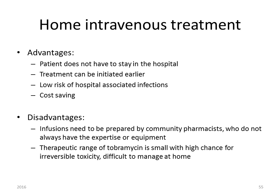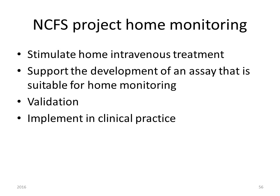At this moment, many CF patients receive home intravenous treatment. The advantages are that the patient doesn't have to stay in hospital, treatment can be initiated earlier, there is a low risk of hospital-associated infections, and it is cheaper than hospital admission. The disadvantages are that infusions must be prepared by community pharmacists who may lack expertise or equipment, and the therapeutic range of tobramycin is very narrow — patients have a high chance of irreversible toxicity which is difficult to manage at home.